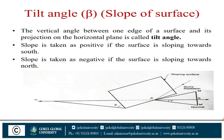Slope of surface (tilt angle): The vertical angle between one edge of the surface and its projection on the horizontal plane is called the tilt angle or slope. The slope is taken as positive if the surface is sloping towards the south side, and negative if the surface is sloping towards the north side. So positive means south side and negative means north side. This is the most important definition in the GTU exam.